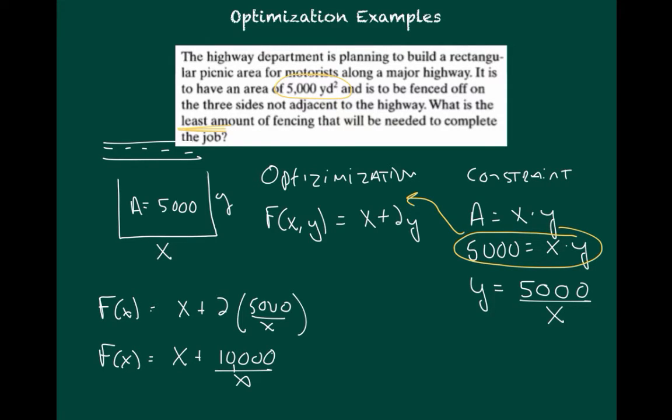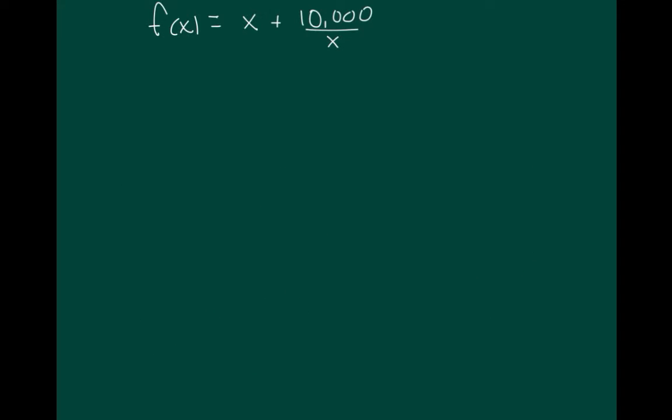Now, in order to find the optimal values, I need to take the derivative and solve for the critical points. So let's do that. So you may want to rewrite this equation with negative exponents just to make using the power rule easier. So that's x plus 10,000 times x to the negative 1. Well, taking the derivative of that is pretty simple. I'm just going to use the power rule. And I'm left with 1 minus 10,000 x to the negative 2.